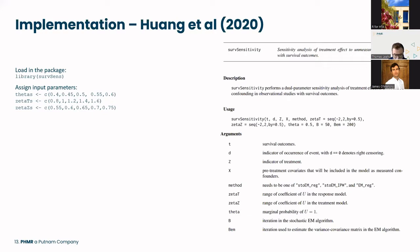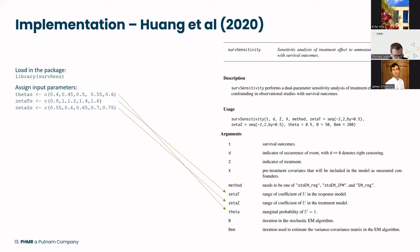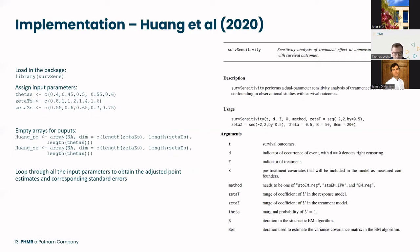We need to provide the method with the parameters mentioned earlier: the marginal probability of the unmeasured confounder denoted by theta, the range of coefficients of the unmeasured confounder in the response model denoted by theta_t, and the range of coefficients of the unmeasured confounder in the treatment model denoted by theta_z. Importantly, we're providing multiple values for theta_t and theta_z because we have uncertainty about the input parameters and want to reflect this in the output.